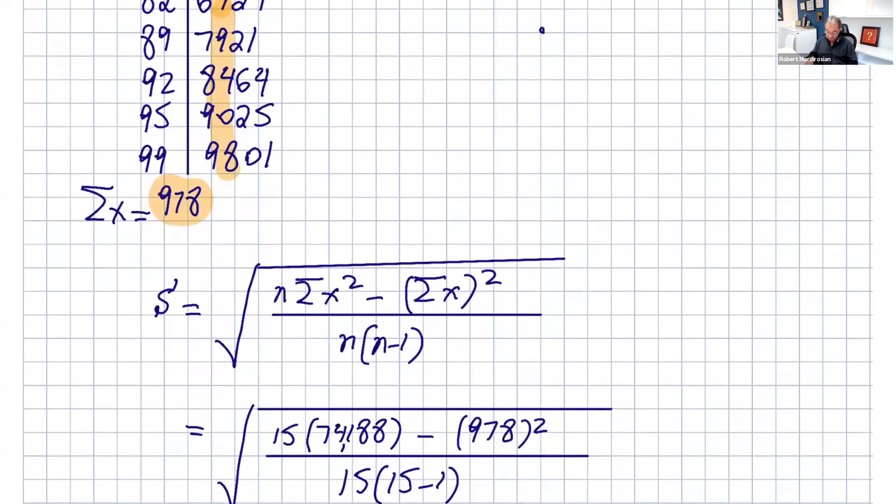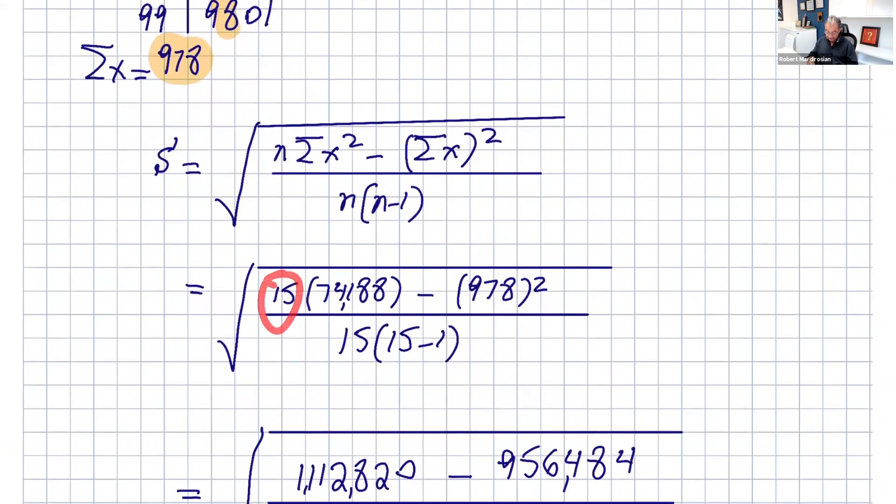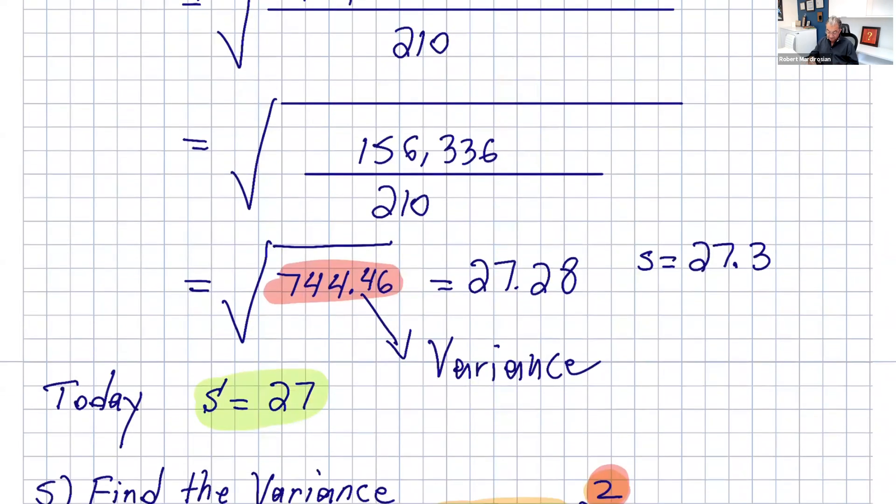Coming back to the formula, it's 15 times 74,188, which is sum of x squared, minus 978 squared. If you use your calculators, you get 744.46. You have to take square root of that. Rounding of the standard deviation is the same as the mean, to the nearest tenth.